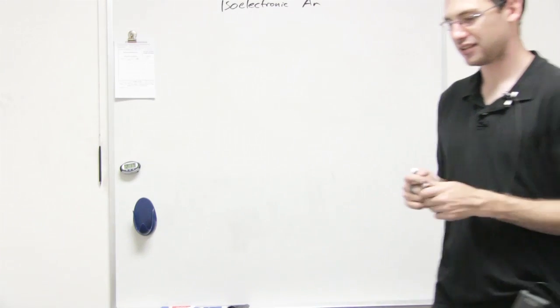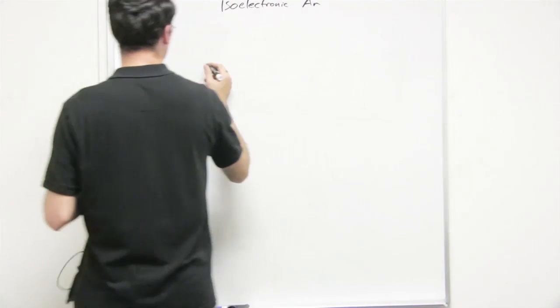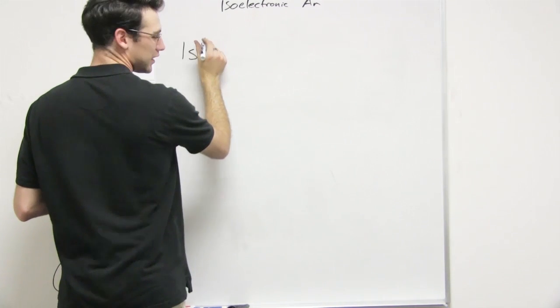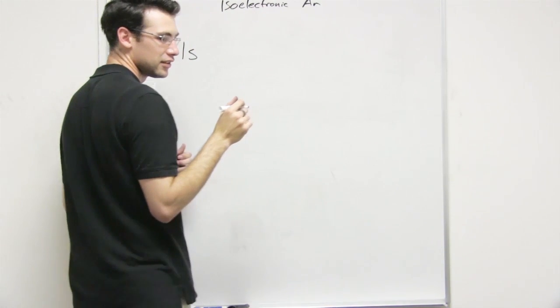Oh, excited states. Neutrals. So identify the neutral element. Can you read it off? Yeah. Identify the neutral element represented by its excited state electronic configuration and then write the ground state electronic configuration.